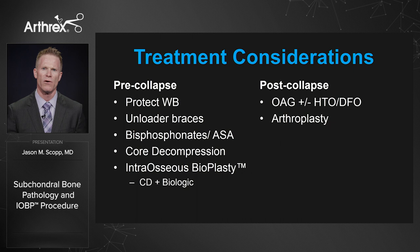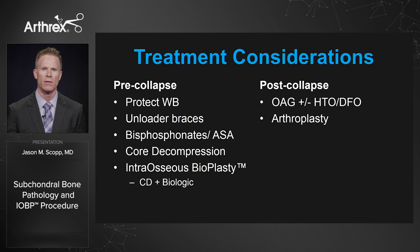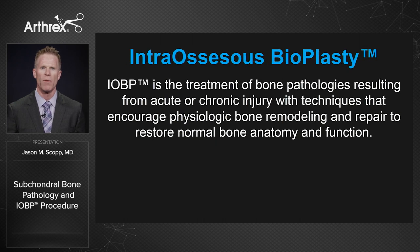For treatment considerations, intraosseous bioplasty is in the pre-collapse algorithm. Post-collapse, choices include osteochondral allograft plus or minus osteotomy, or even arthroplasty. Pre-collapse is where we have the option for intervention: protect weight-bearing, unload the lesion, consider bisphosphonates and aspirin, and consider operative intervention including core decompression and intraosseous bioplasty. Intraosseous bioplasty is defined as core decompression with the addition of a biologic solution — treating bone pathologies from acute or chronic injury with techniques that encourage physiologic bone remodeling and repair. It addresses all three elements of the bone healing triad: cell, signal, and scaffold.